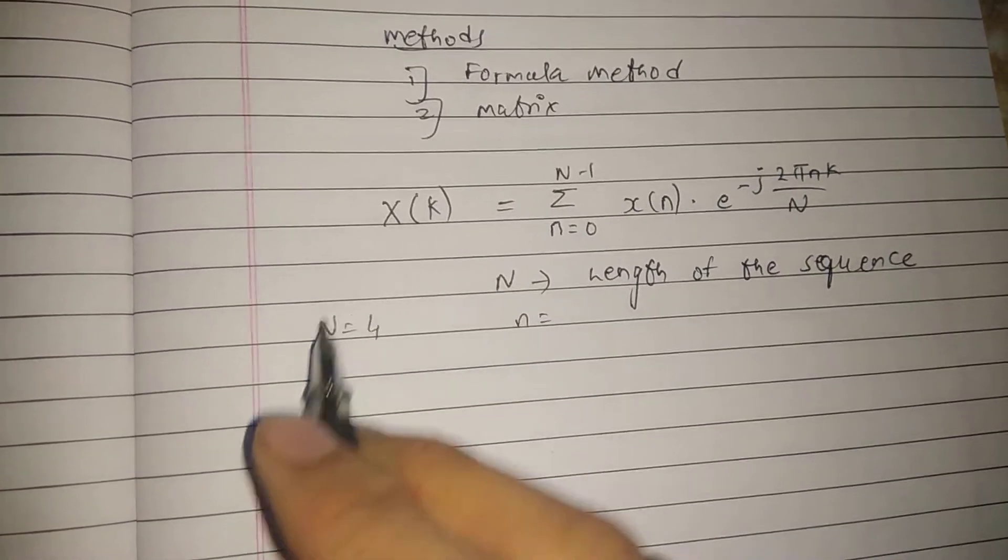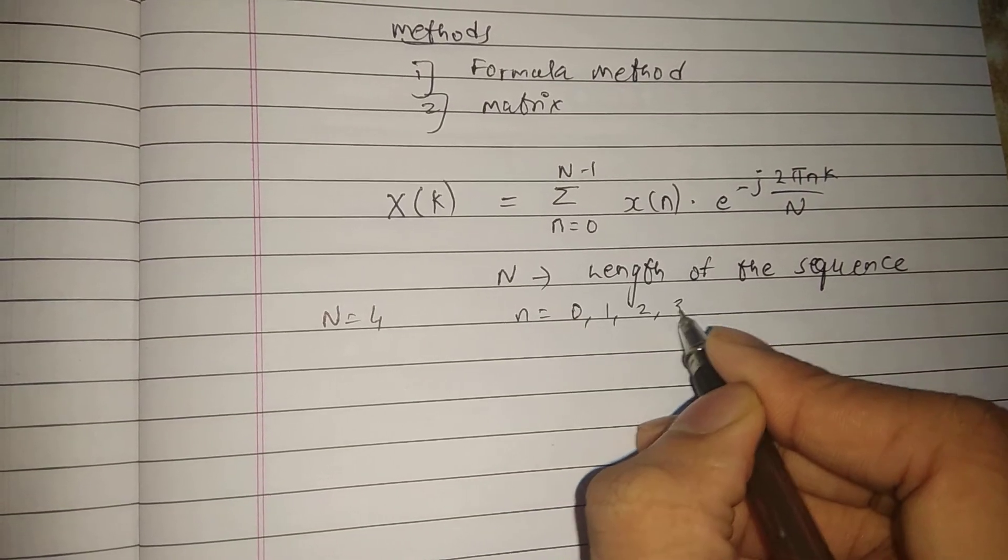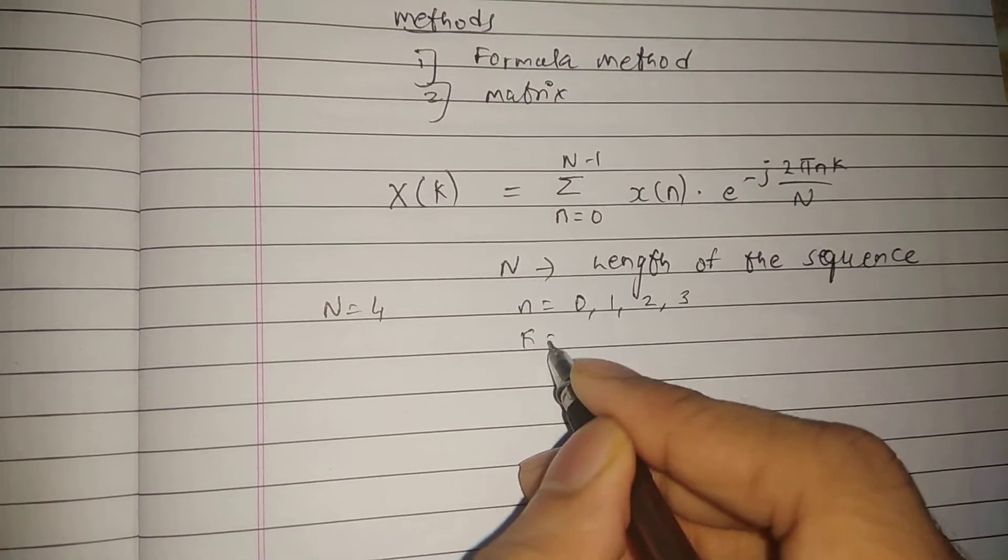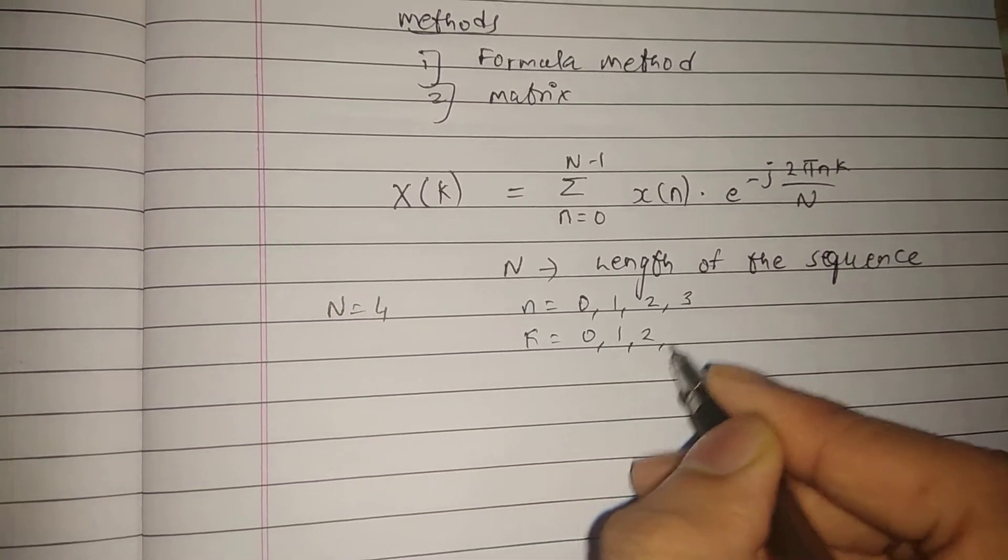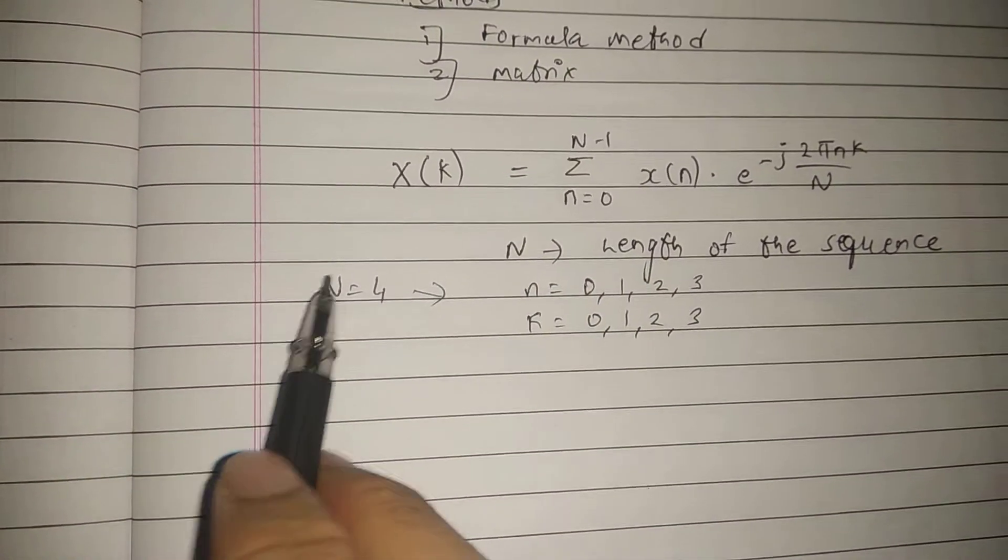Suppose your length of the sequence, that is capital N, is 4, so your n will range from 0, 1, 2, 3. Similarly, k will also range from 0, 1, 2, 3.